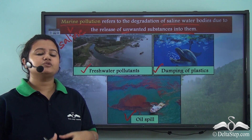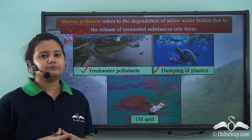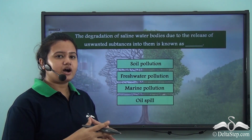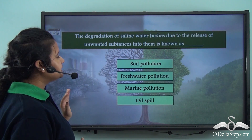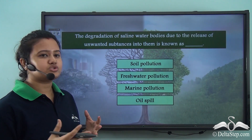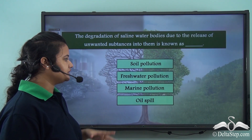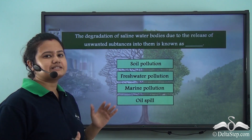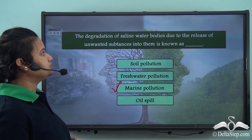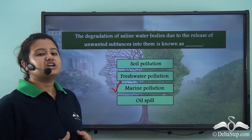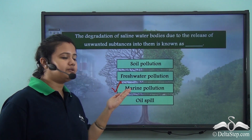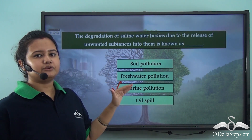So till now we have discussed the meaning of marine pollution and its various sources. Now we shall discuss the effects of marine pollution. Quick question: the degradation of saline water bodies due to release of unwanted substances into them is known as — soil pollution, fresh water pollution, marine pollution, or oil spill? The correct answer is marine pollution.